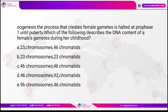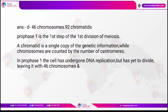Question: Oogenesis is the process that creates female gametes and is halted at prophase 1 at puberty. What describes the DNA content of the female gamete during childhood? Since it is halted at prophase 1 of the first division of meiosis, each female contains oocytes which have 46 chromosomes and 92 chromatids.